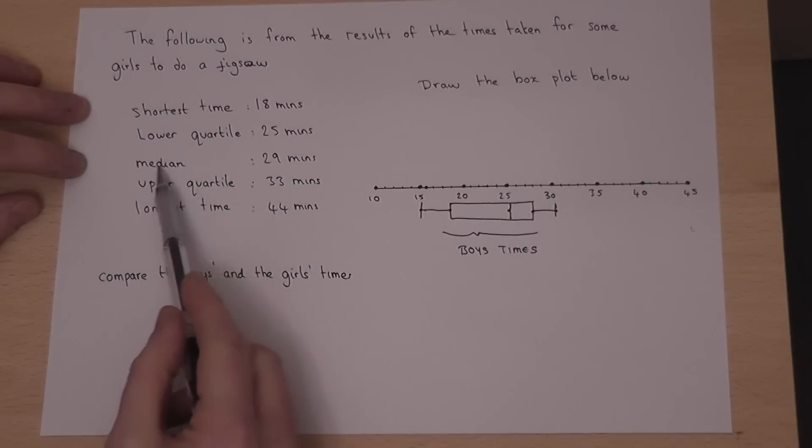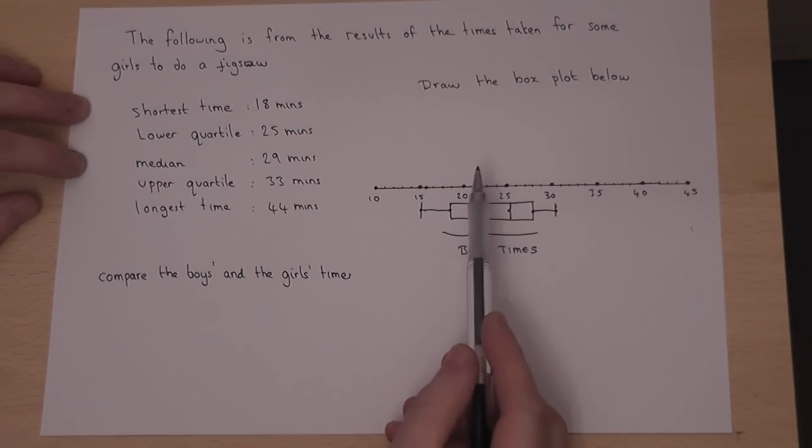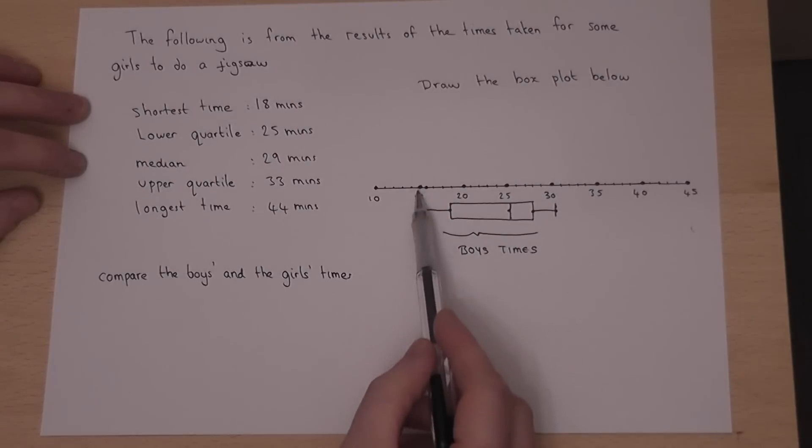The following information represents the times taken by some girls to do a jigsaw. And our first task is to turn this information into a box plot above the axis.